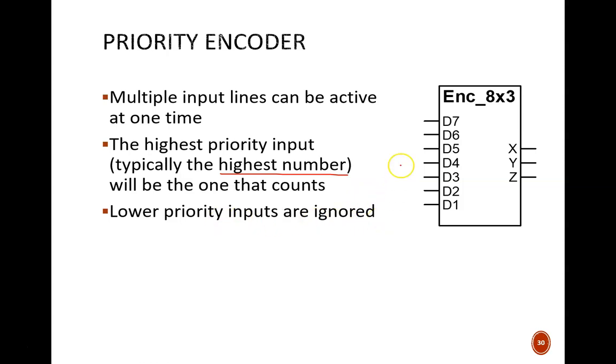For instance, if lines 2, 4, and 6 are all active, then 6 receives priority and the output code is 110. Notice that the device symbol shown here is identical to the one shown earlier. There is not a separate switch to activate priority functionality. Instead, a different name should be used on the device or its behavior must be clearly defined in documentation.